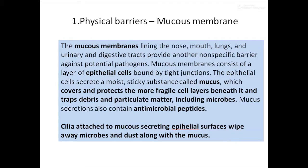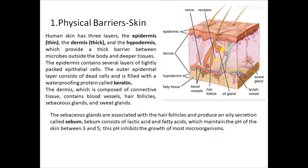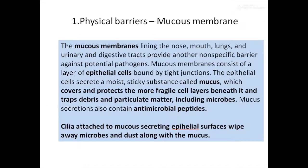Mucous membranes lining the nose, mouth, lungs, and urinary tract create a non-specific barrier against potential pathogens. They consist of a layer of epithelial cells bound by tight junctions, which produce the moist sticky substance called mucus. Mucus covers and protects the more fragile cell layers beneath it and traps debris and particulate matter including microbes. Mucus also contains antimicrobial peptides inhibitory to microbes, and cilia attached to mucous membranes wipe away microbes and dust.